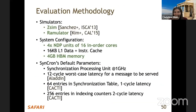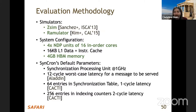The evaluation uses two simulators: ZSim for the processor side and Ramulator for DRAM, configured with four NDP units each having 16 in-order cores, using HBM memory technology. Synchron's latency overheads are characterized using Aladdin, to determine processing time for encoding/decoding messages in synchronization engines, and Cacti, to determine latency for accessing the synchronization table and index counters.